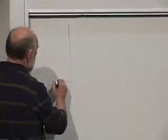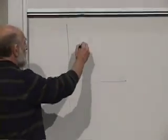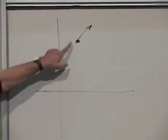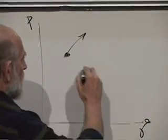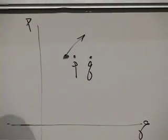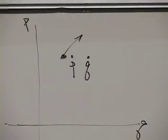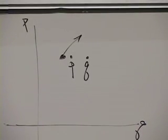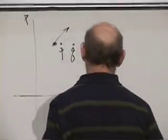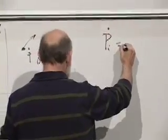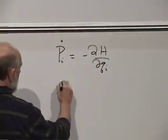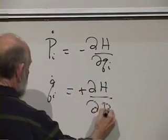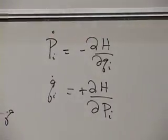This is dynamics as a flow in phase space, as a kind of fluid flow. Every point has associated with it a motion that depends only on where you are. A motion means a time derivative — this is p, this is q — it means a p-dot and a q-dot. In other words, a velocity in phase space, consisting of the ordinary velocities, which are the q-dots, plus the p-dots, which are the time derivatives of the p's. So we just write down Hamilton's equations: p-sub-i-dot equals minus dH by dq-sub-i; q-sub-i-dot is plus dH by dp-sub-i. That's all of mechanics in a nutshell, in the Hamiltonian form.